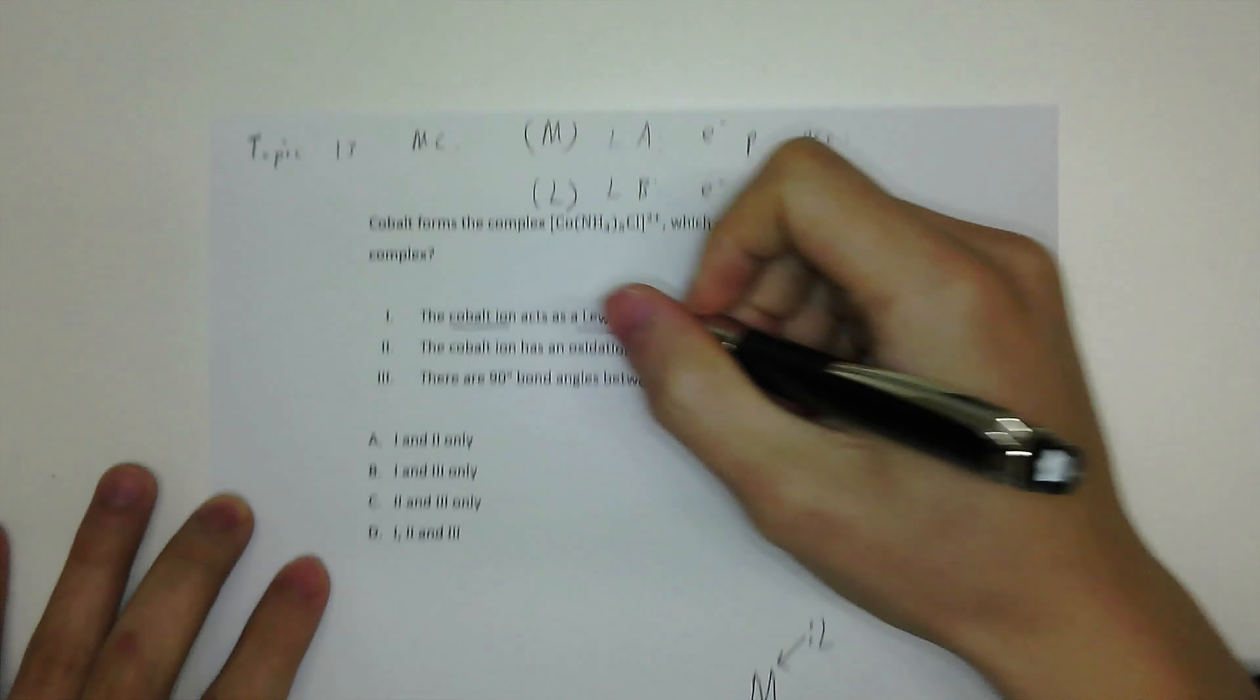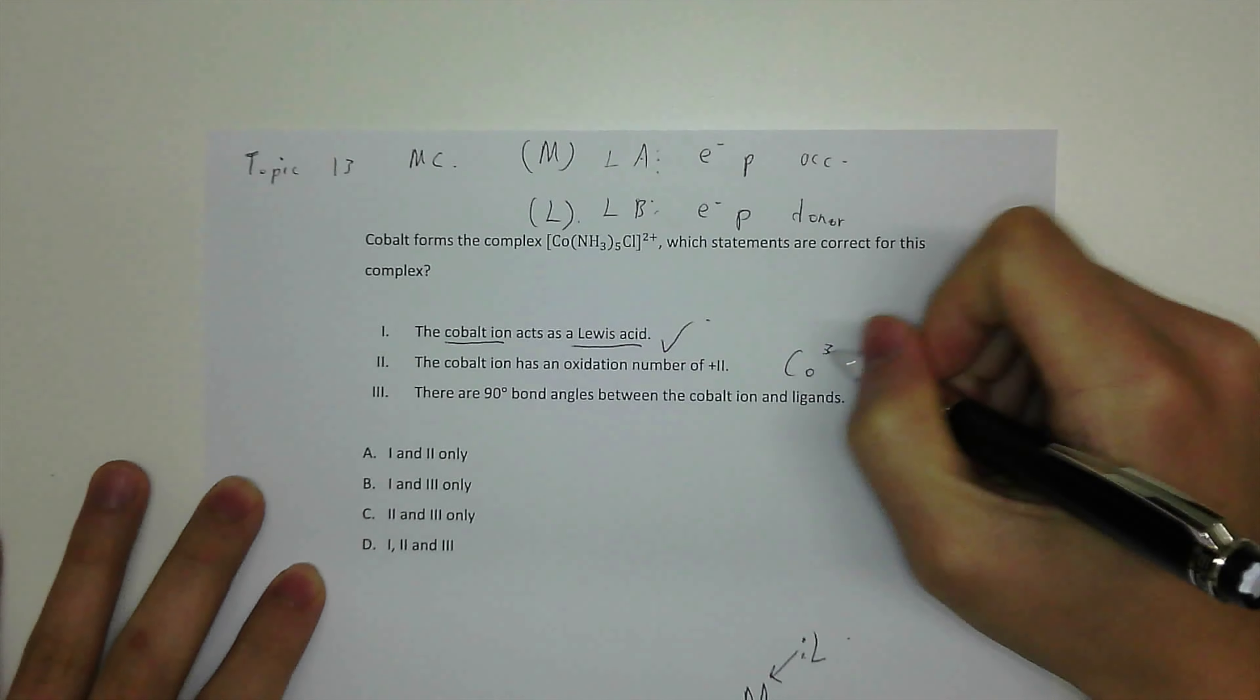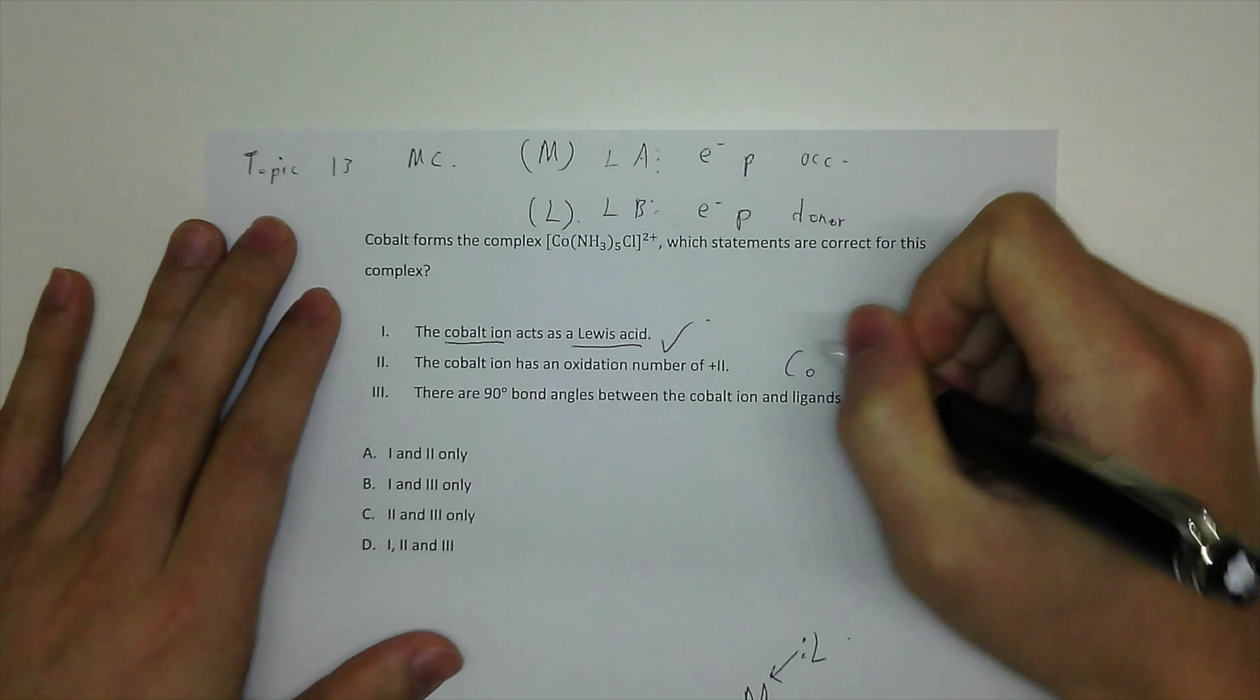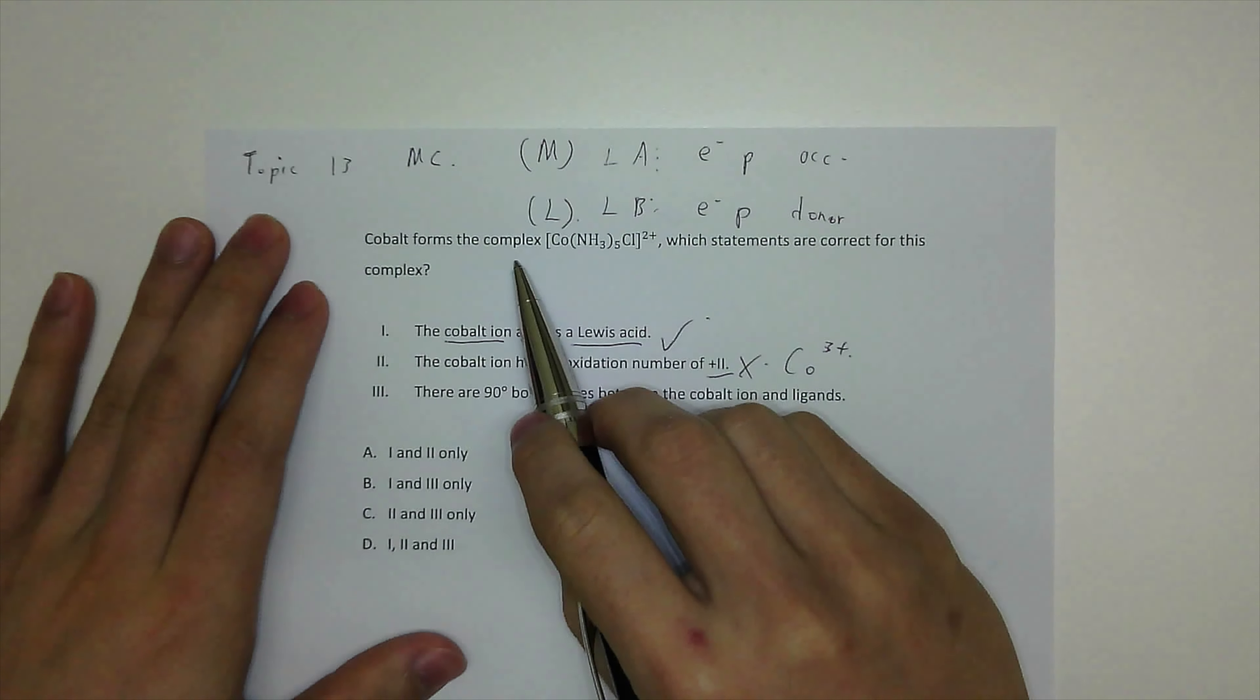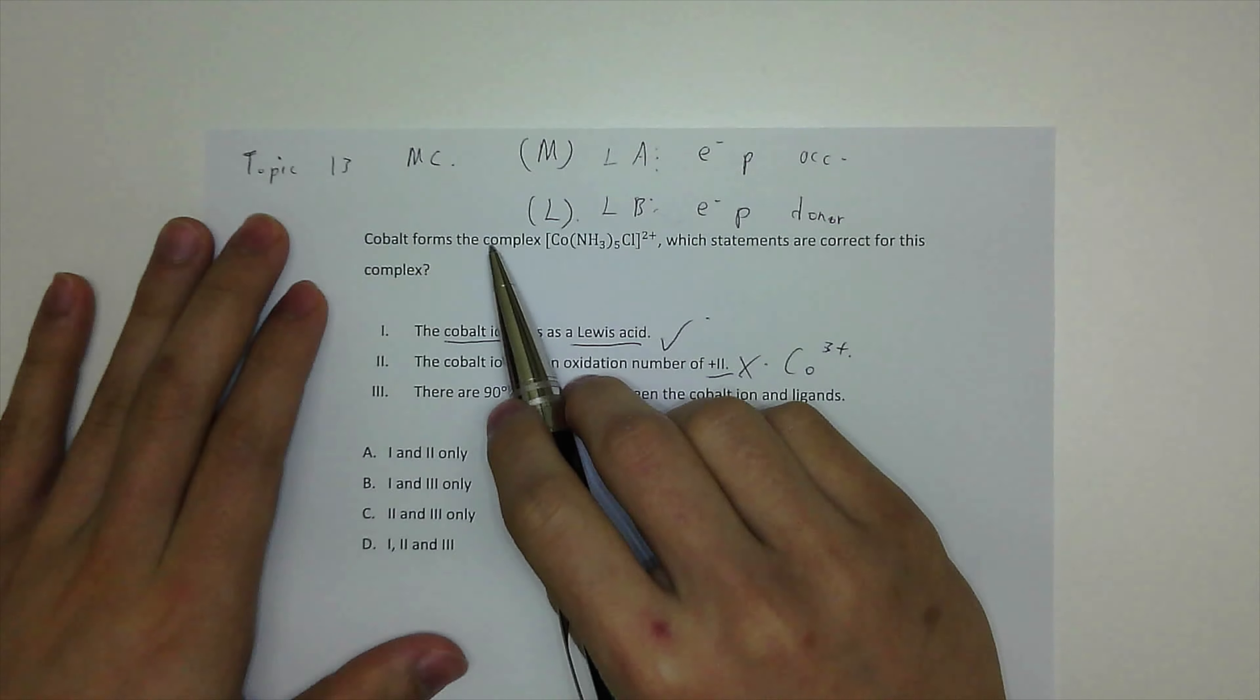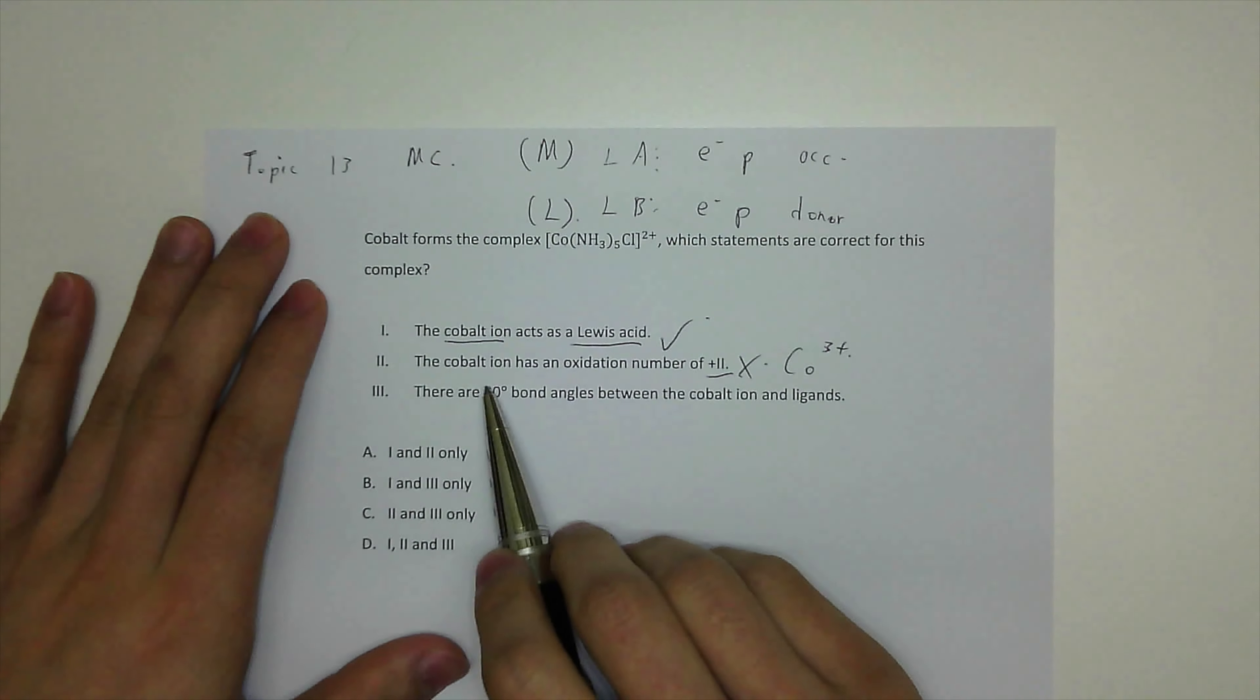So that means it's cobalt three plus, that's the metal ion, the charge is three plus, so it's wrong, it's not plus two. But if the complex ion, the oxidation number, I mean the charge for complex ion is plus two, then the statement will be correct.